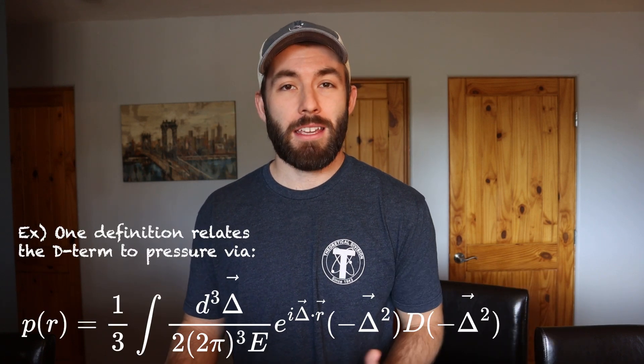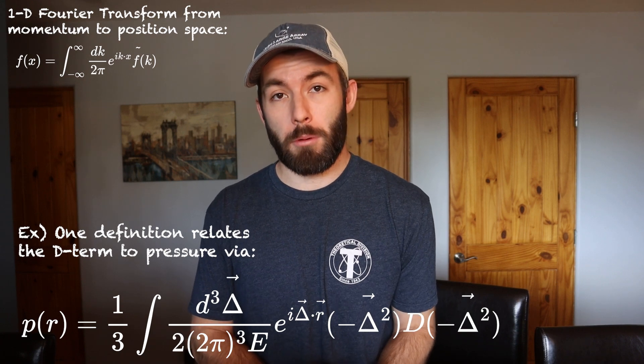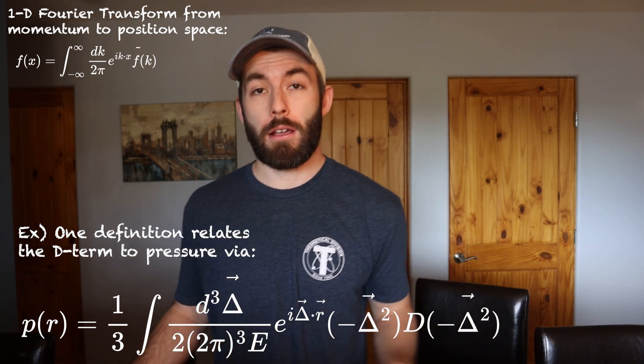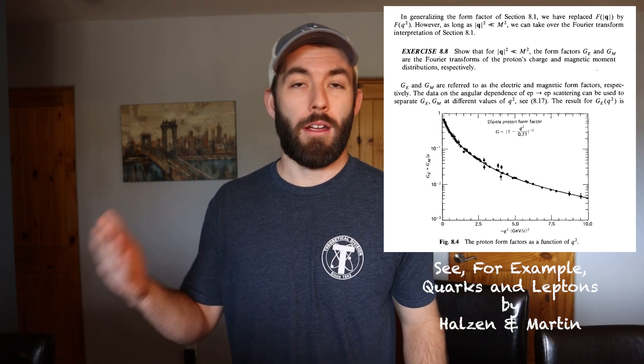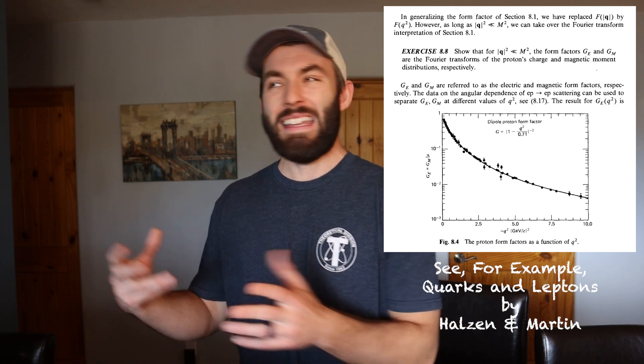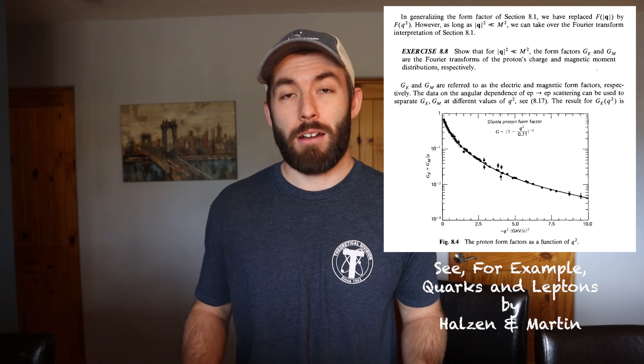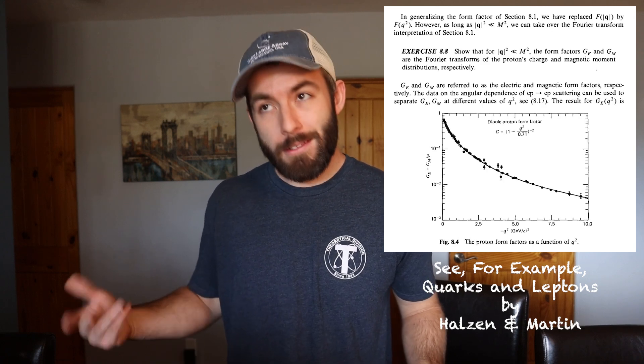Now that we have the gravitational form factors, we can relate them to the densities like energy, pressure, and shear force — at least in one definition — by taking various three-dimensional Fourier transforms of the form factors. This is pretty analogous to what you would do in quantum electrodynamics, where the electromagnetic form factors are Fourier transformed to relate to the charge density and magnetic moment in the Breit frame under some limits. So this is not a perfect definition — it's not Lorentz invariant. It's subject to relativistic corrections that can be systematically calculated, but it's something we can calculate.